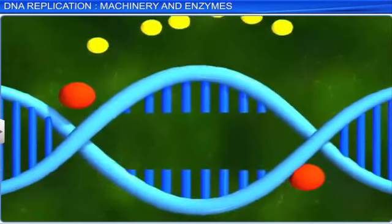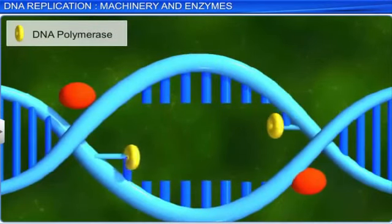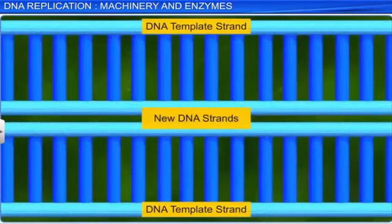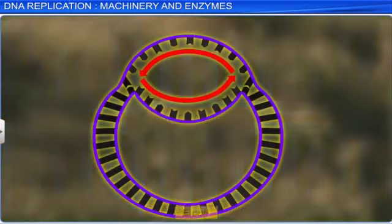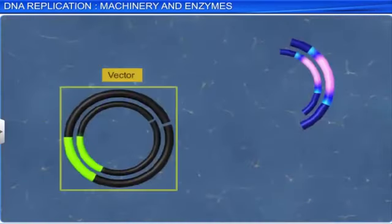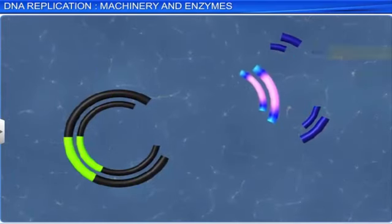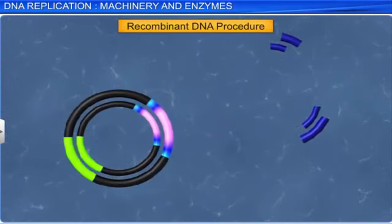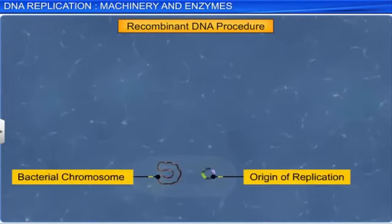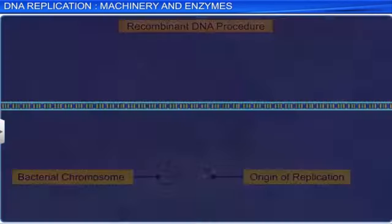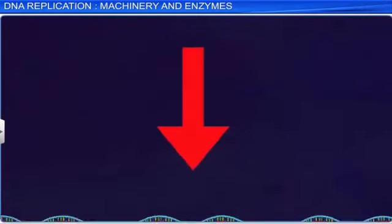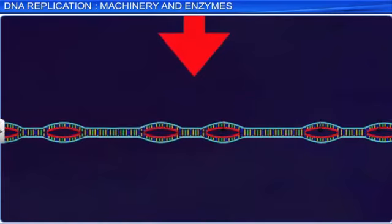Such a region is known as the origin of replication. This is also the reason why a vector is required when a piece of DNA needs to be replicated during recombinant DNA procedures, as it is the vector that provides the origin of replication. In some cases, like eukaryotes with large DNA molecules, there may be many origins of replication that finally merge with one another.